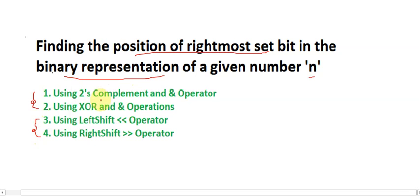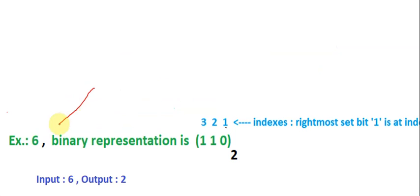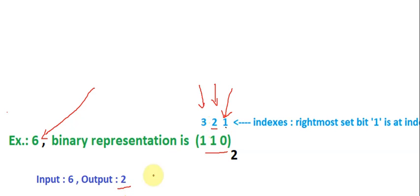Before going into the details of each method, let's look at the problem statement. I've taken the number six as my example. Its binary representation is 110. I'm indicating positions starting from one, not zero. The rightmost set bit in the binary representation of six is at position two, so the output should return two.